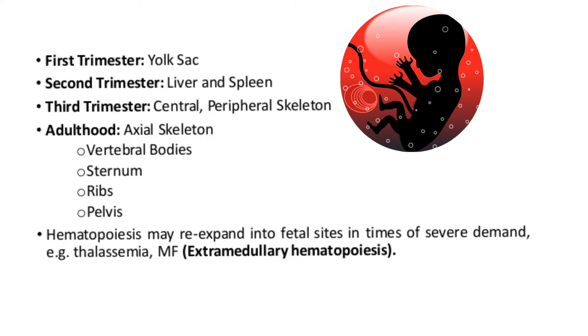Where does hemopoiesis take place? In the first trimester, hemopoiesis occurs in the yolk sac. In the second trimester, it occurs in the liver and spleen. In the third trimester, it occurs in the central and peripheral skeleton.